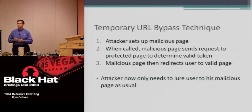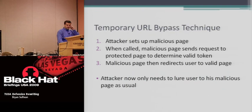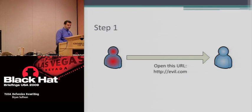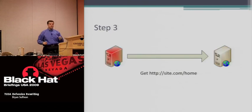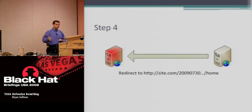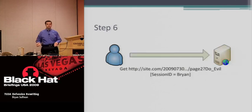The problem with the temporary URL approach is that a third-party accomplice site can bypass it. An attacker lures me to evil.com, then the evil server makes a server-side request to site.com/home — the landing page — which returns a valid timestamp in a 302 redirect. The evil server then redirects me to site.com/valid-timestamp/page-to-do-evil. I follow with my credentials and I'm owned.